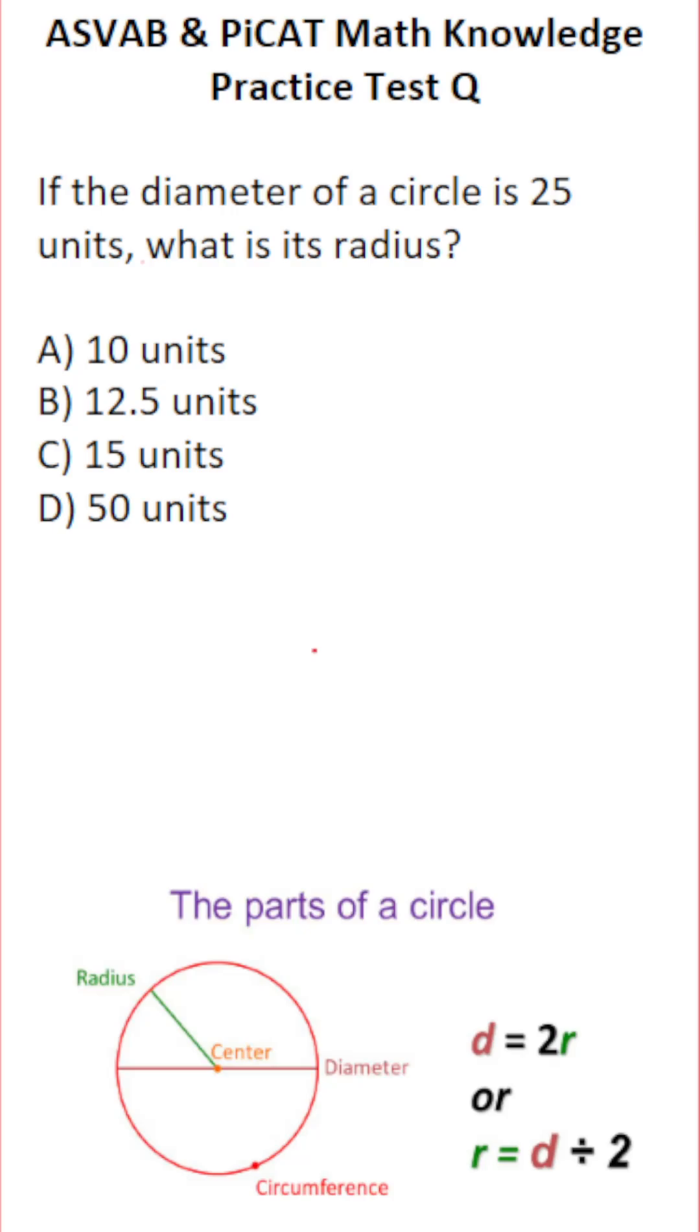As far as the parts of a circle are concerned, here's the center point of the circle. The distance from the center point to the edge is called the radius, and the distance across the circle and through the center point is called the diameter.